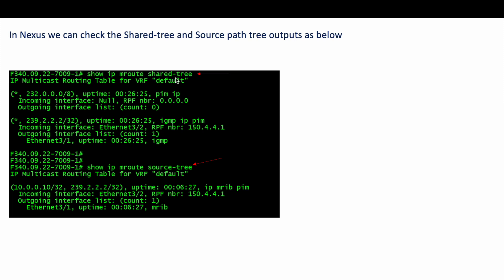Two more useful commands: 'show ip mroute shared-tree' shows the (*,G) entries — what incoming interfaces are requesting traffic for a particular group, for example 239.2.2.2. 'Show ip mroute source-tree' shows the (S,G) entries where the router is reaching directly to the source — for example, source 10.10.10.1 for which traffic is being forwarded. These two commands together show everything the last hop router is learning about shared and source path trees.